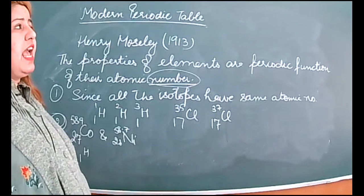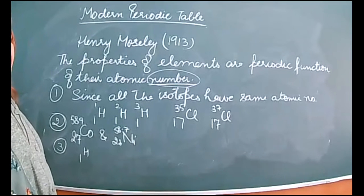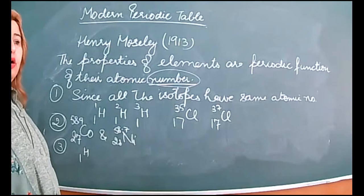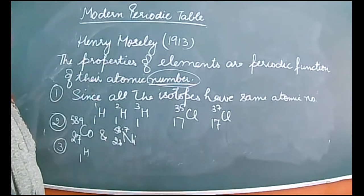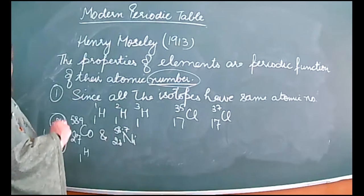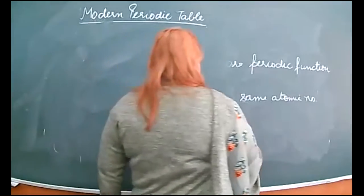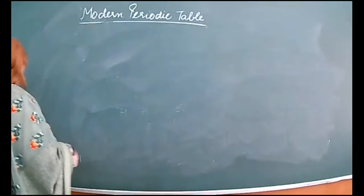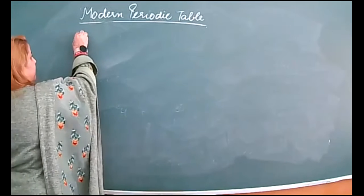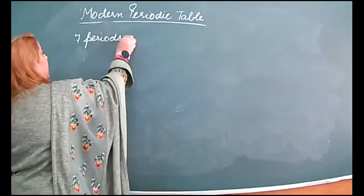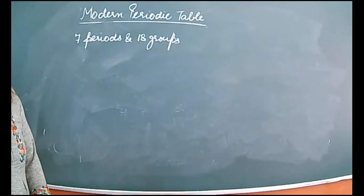Now, the modern periodic table — no doubt Henry Moseley gave the atomic number basis. But the modern periodic table also had great contribution from Neils Bohr, who helped by giving the electronic configuration method. In the modern periodic table, there are seven periods and eighteen groups.